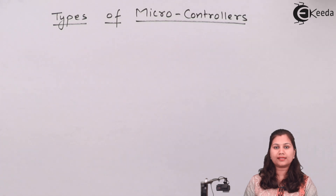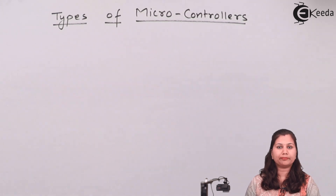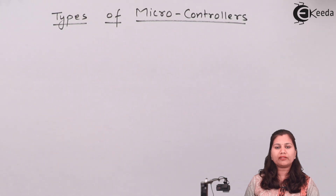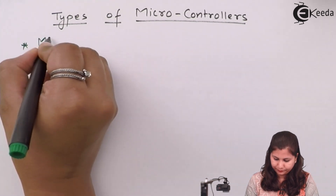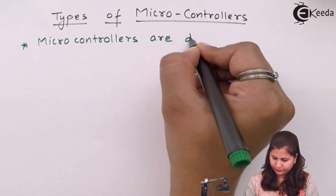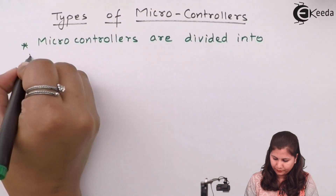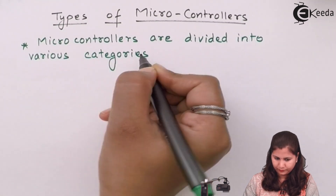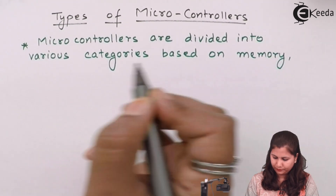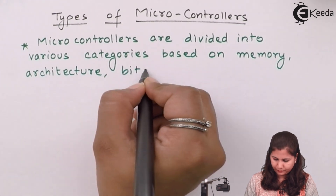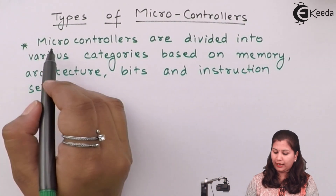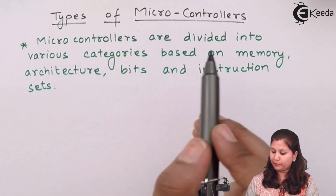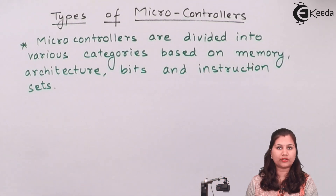Microcontrollers are classified into various categories based on bits, memory architecture, and instruction sets. So there are various bases on which microcontrollers are classified.